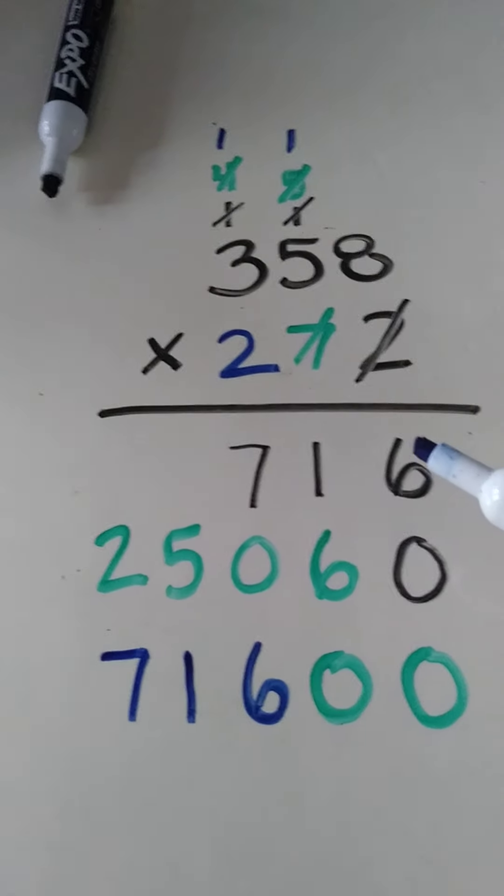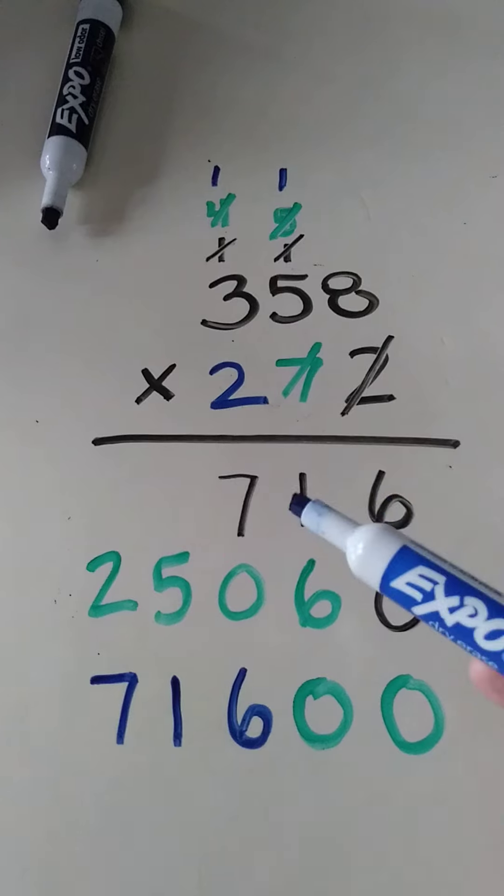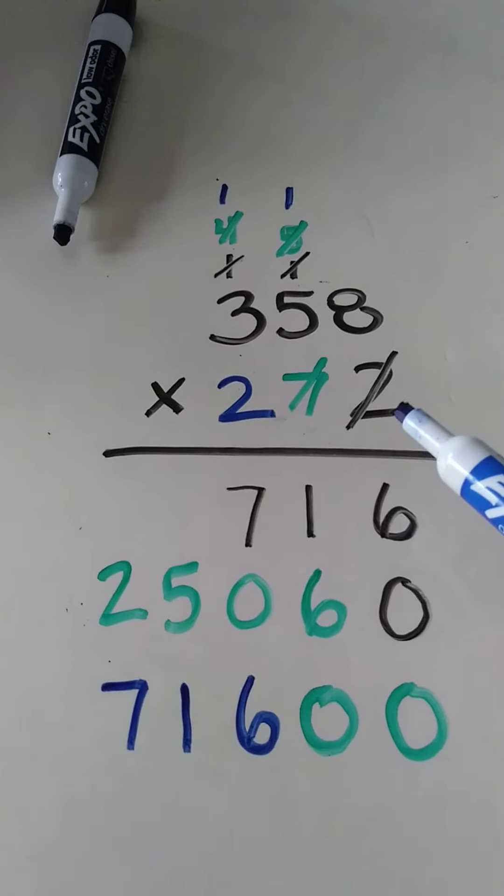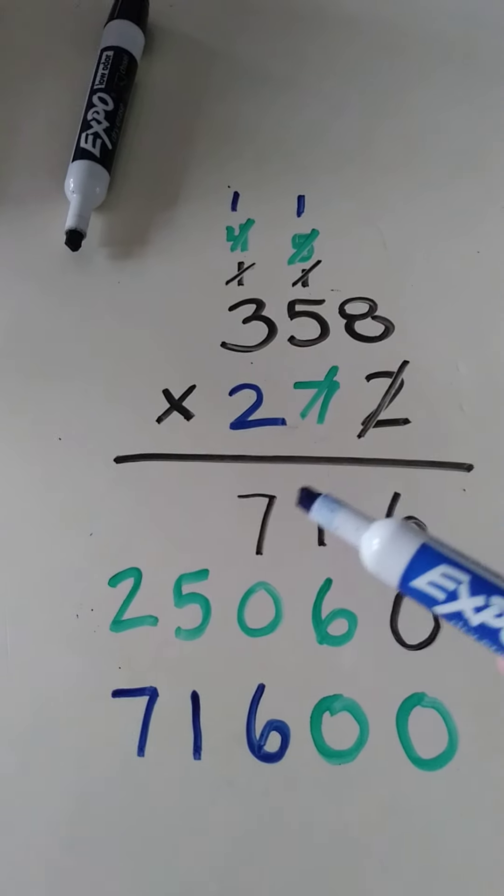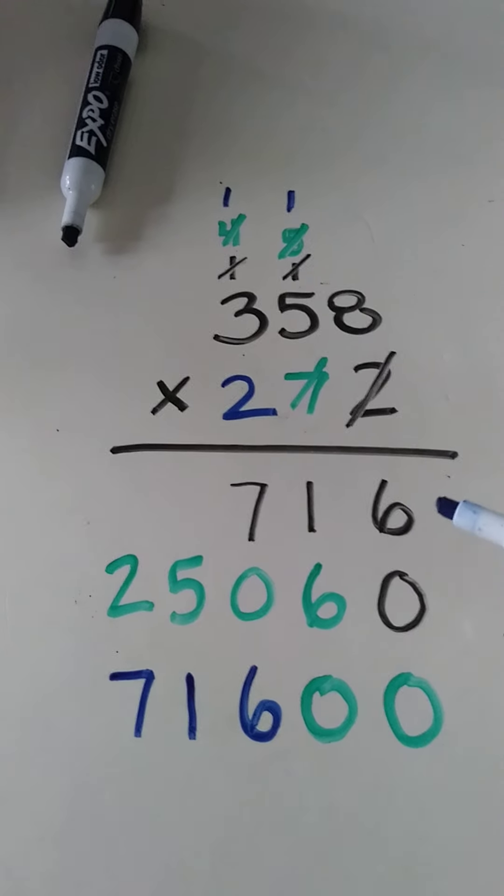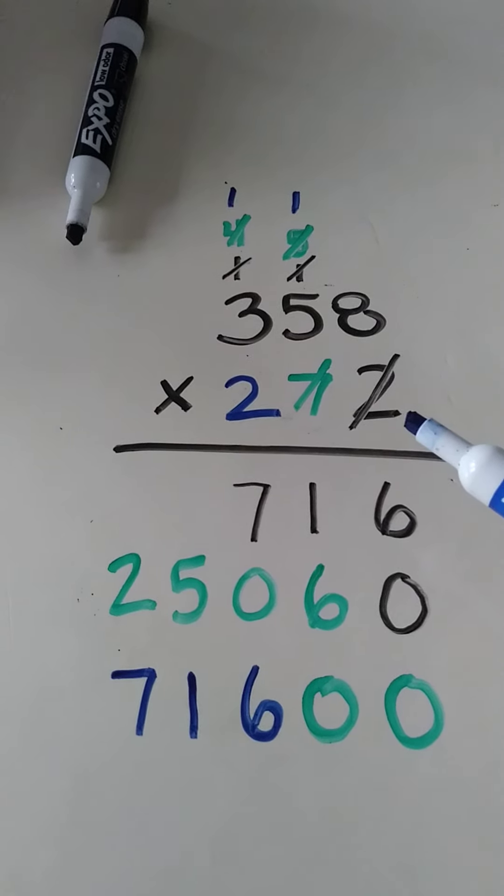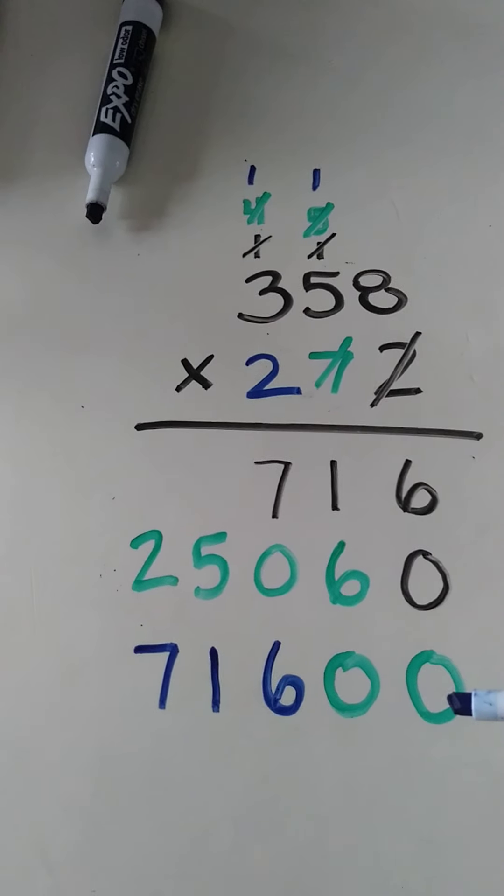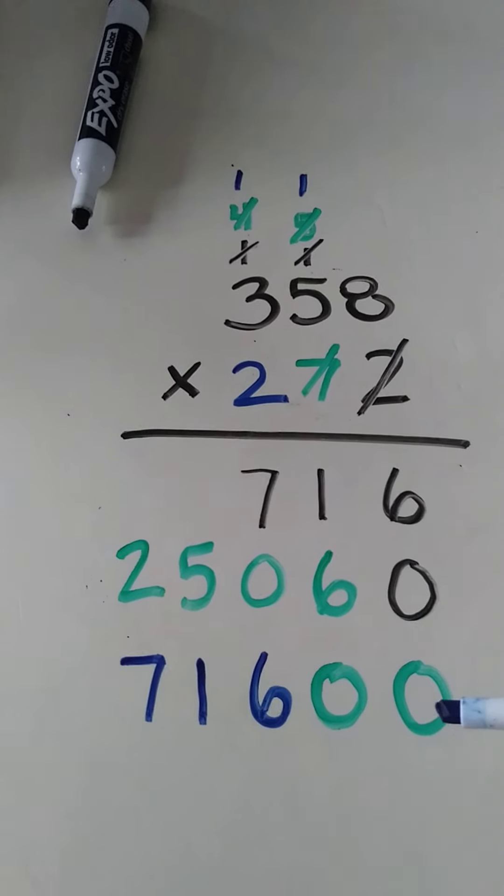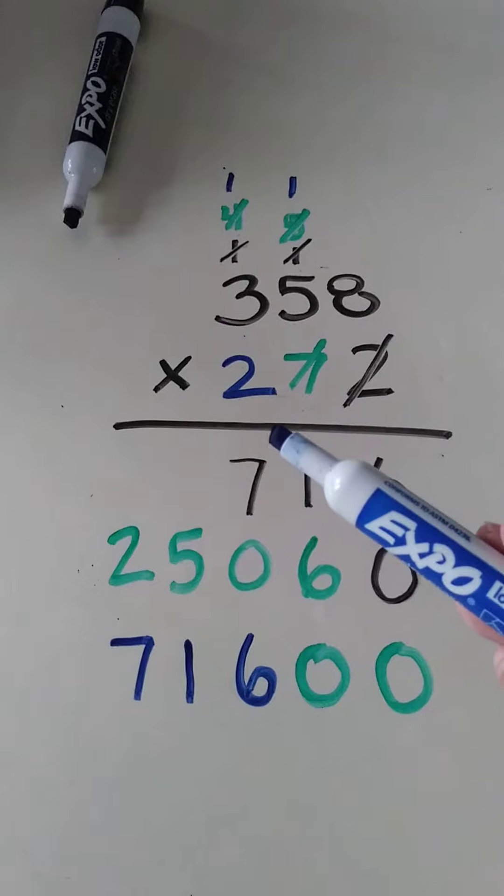Now you'll notice we have the same digits up here, the 716 and the 716 down here, because it is the same digit. But again, it's not going to be the same value because here we multiplied 358 by 2, because 2 is in the ones place. And here we multiply 358 times 200, because the 2 was in the hundreds place.